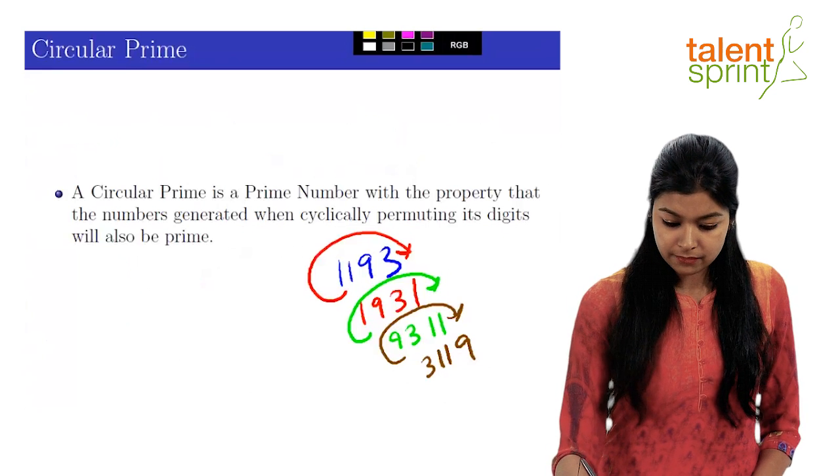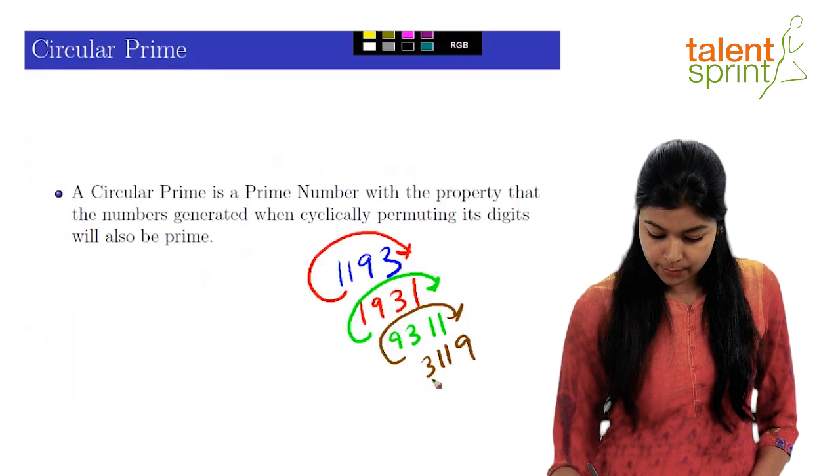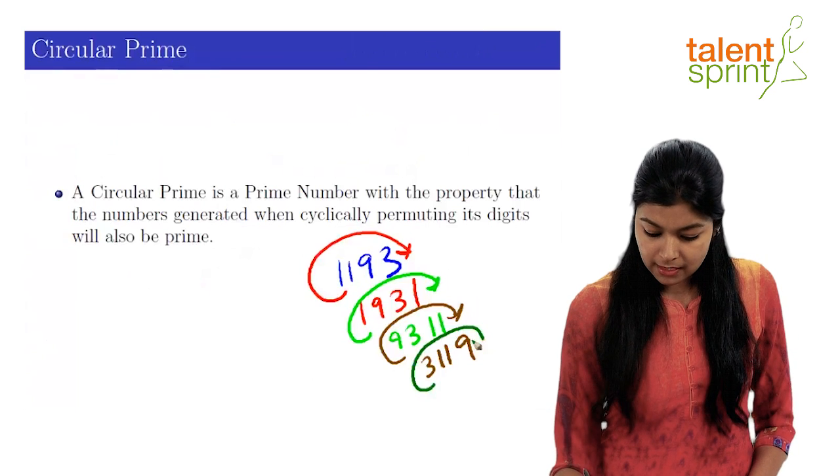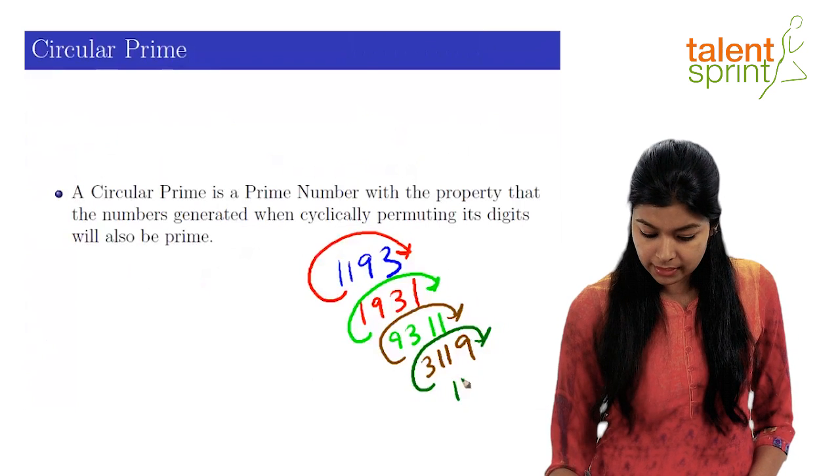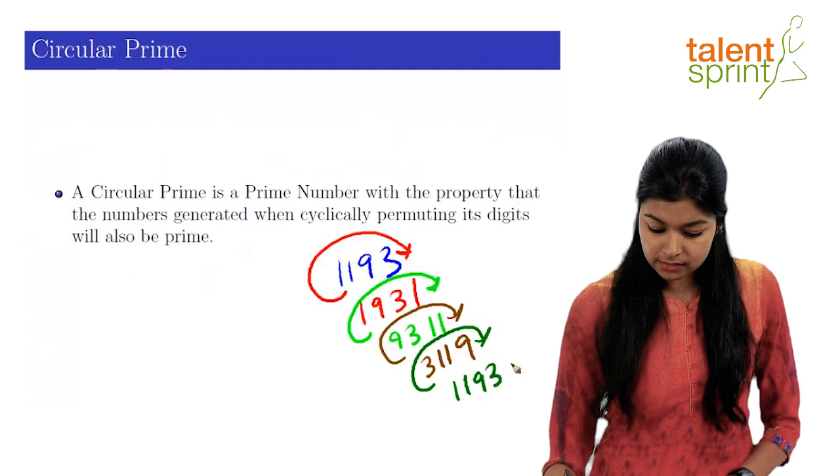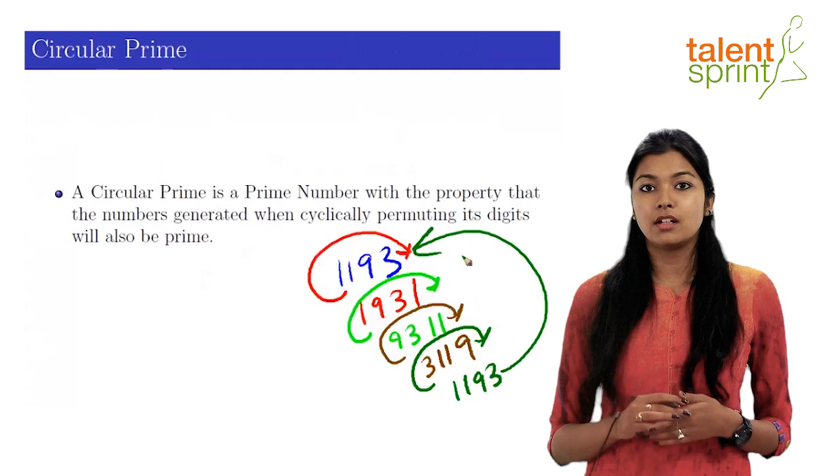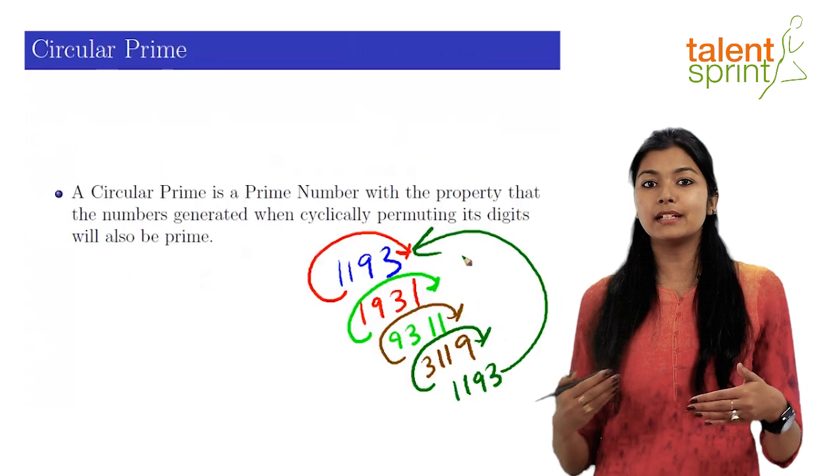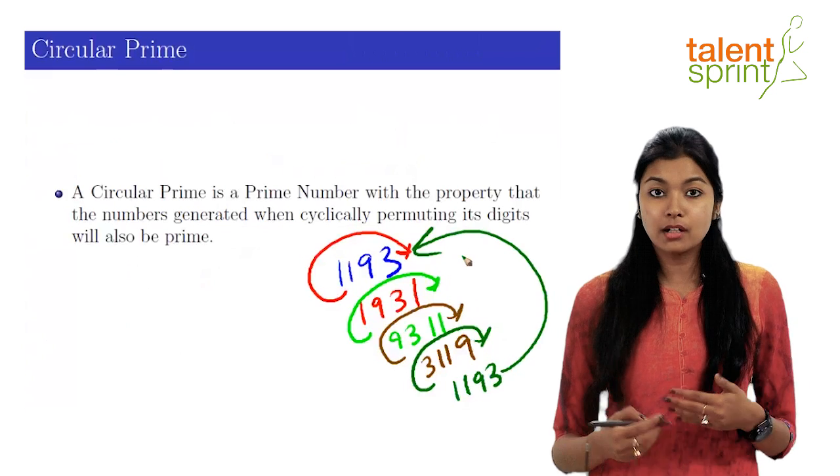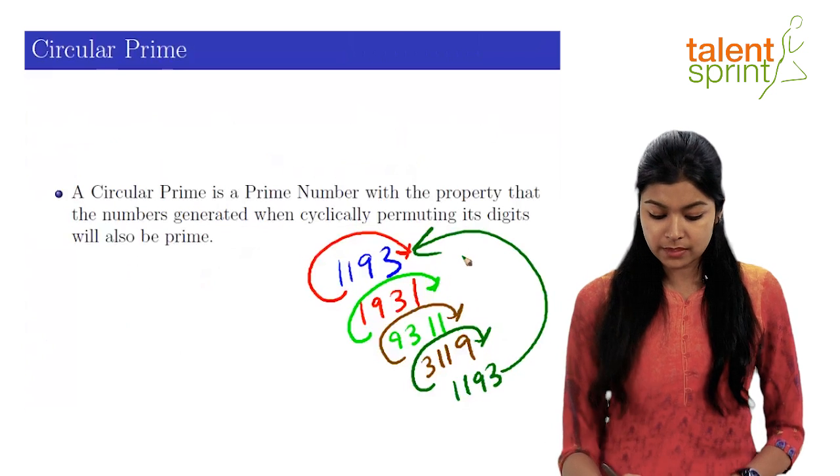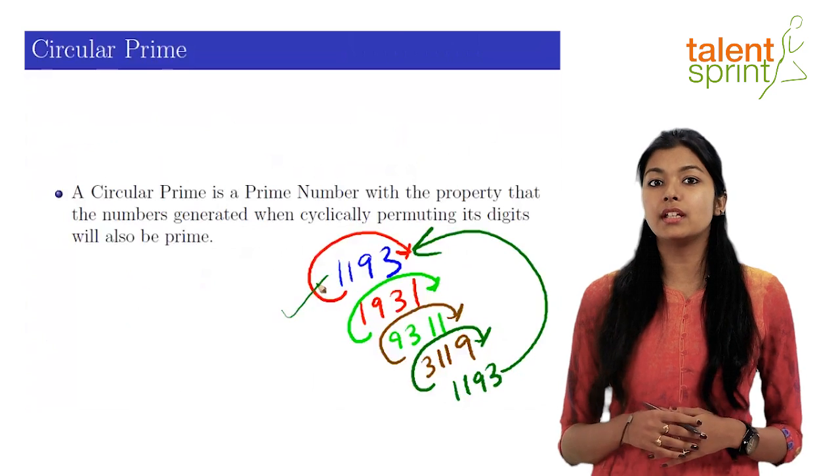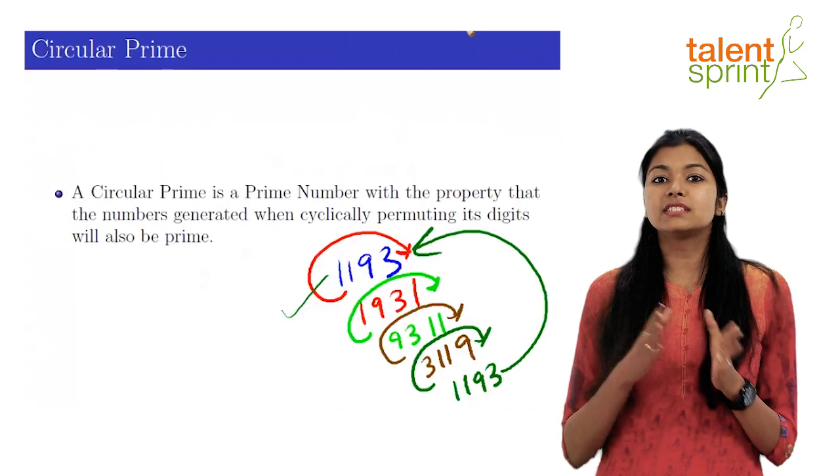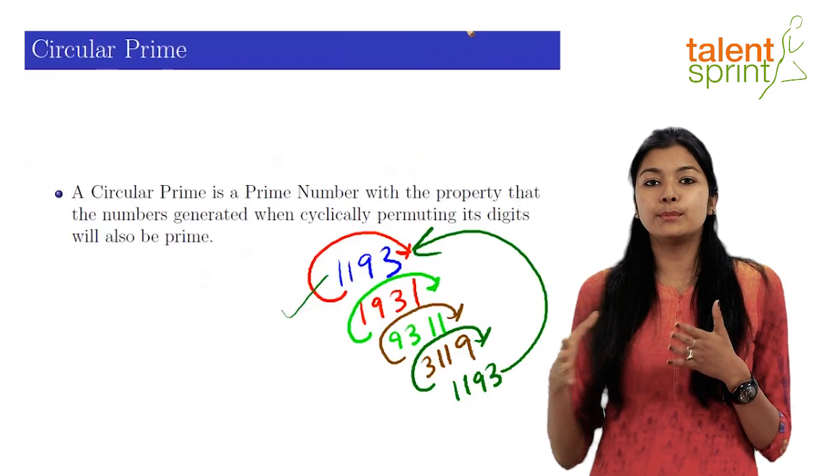Now finally, when we again repeat this step, take this 3 and cyclically rotate it, move it to the end. What we get is the original number. So all the numbers that were obtained in the process of cyclically permuting this number are also prime numbers. So we can say that 1193 is a circular prime.